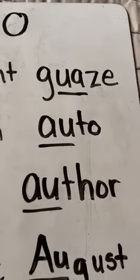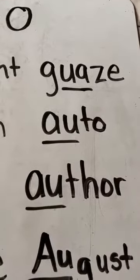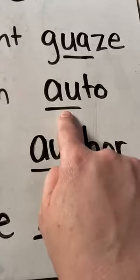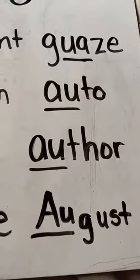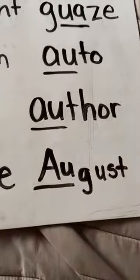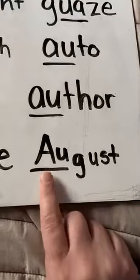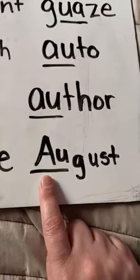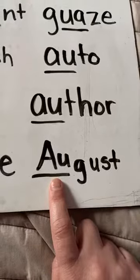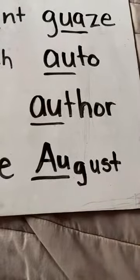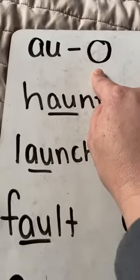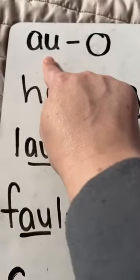Now, you may not know what gauze is. Gauze is like if you skin your knee and they have to put a bandage on it — that's what they wrap around it, gauze, to keep it nice and safe. Sound: ah. Word: auto. Auto is a car. Sound: ah. Word: author. Ooh, look at this next one — why did I have to capitalize that A? You're right, because it's at the beginning and it's the name of the month. Sound: ah. Word: August. Remember that AU, just like when you're going to the doctor, you open your mouth and say 'ah' so they can see inside. So AU says 'ah.'